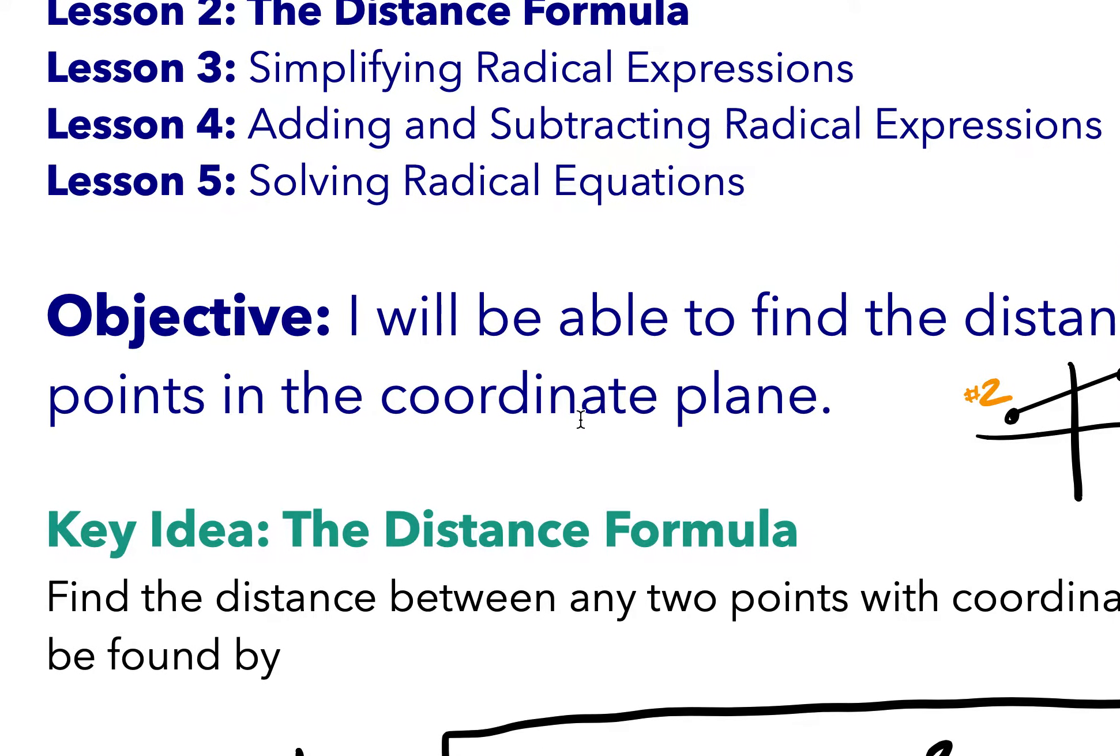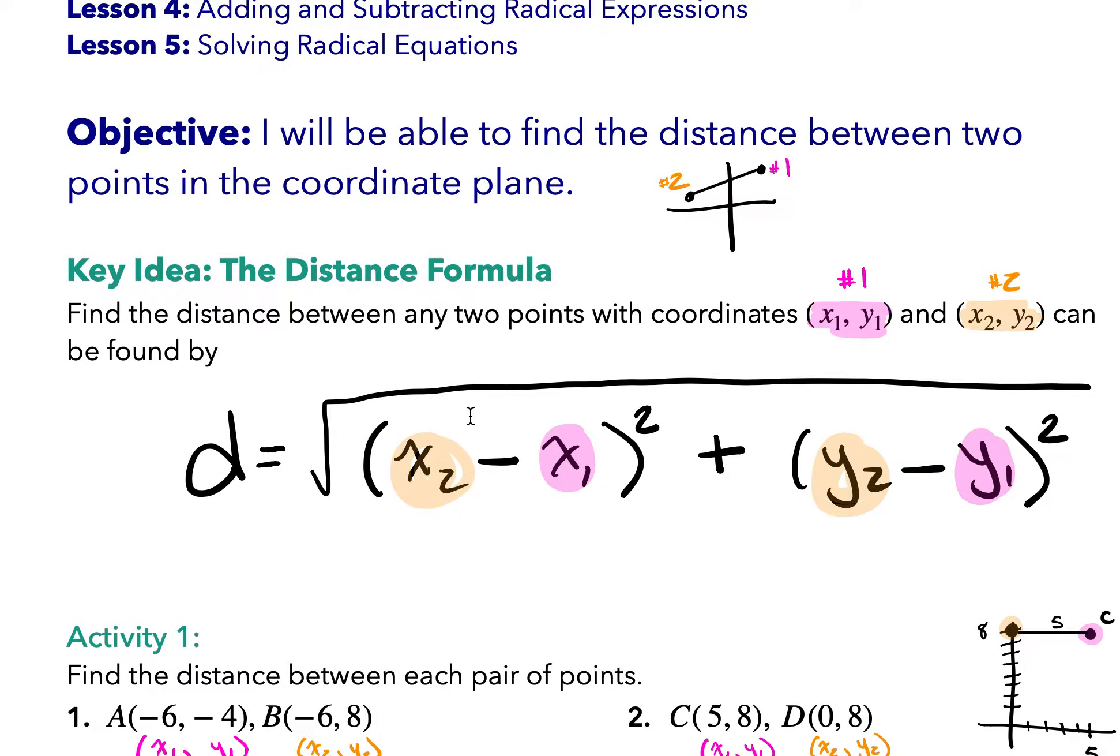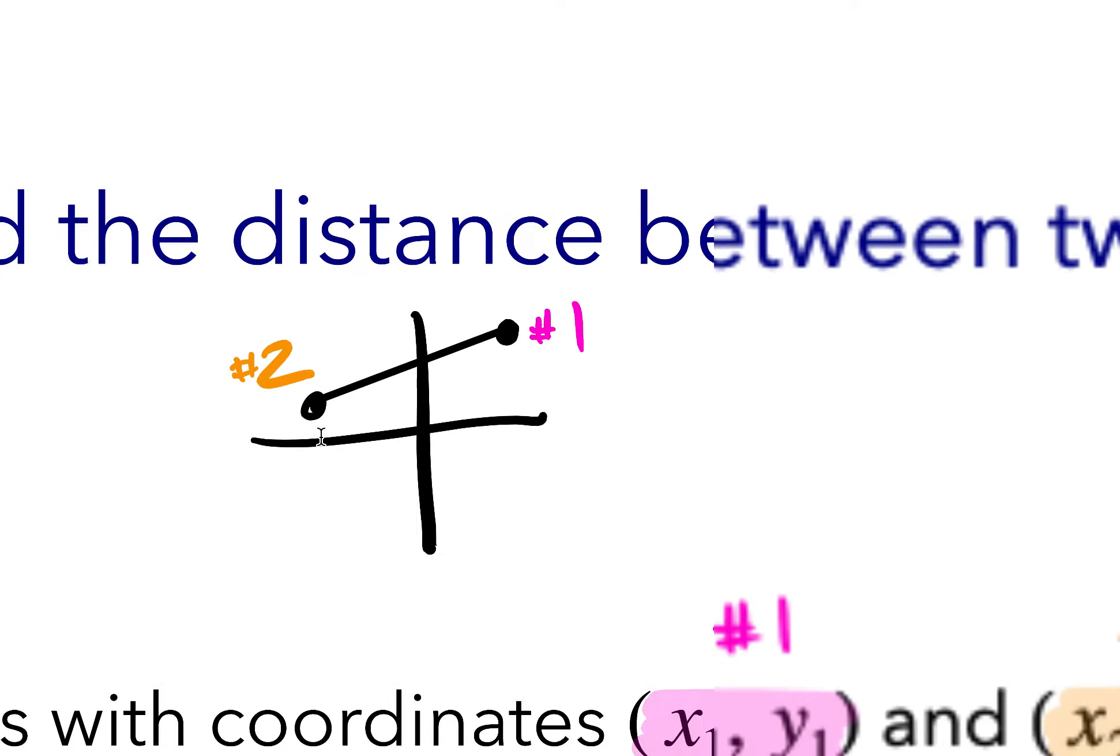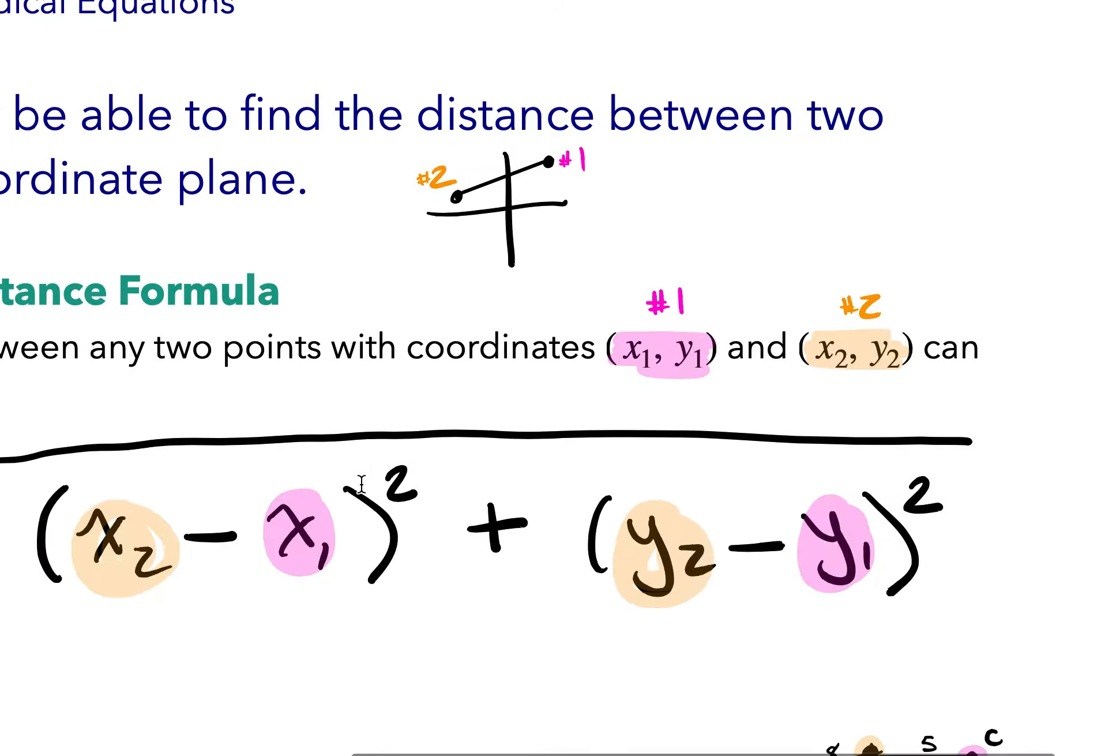So our goal is that by the end of the day, you will be able to find the distance between two points on the coordinate plane. Now what that means is when I say the coordinate plane, I mean this graph looking guy right here. So basically you want to find the distance between point one, this first pink point and the second orange point.